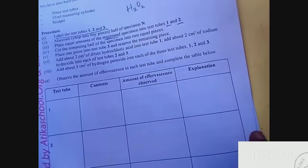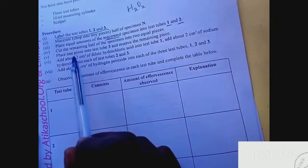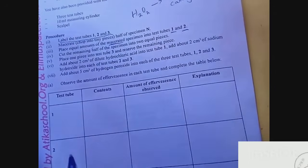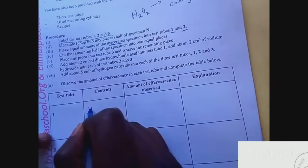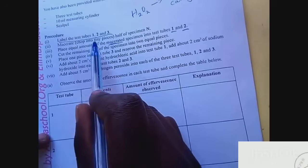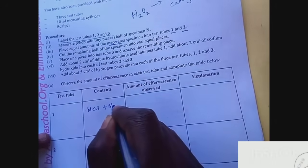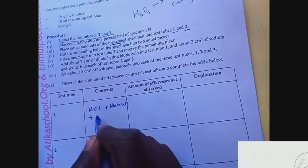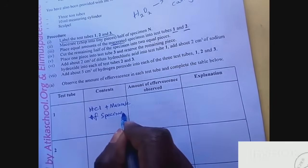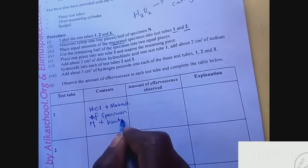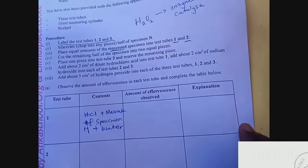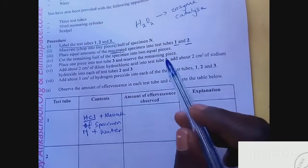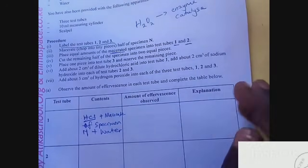Let's see the contents in test tube one. You have been told to add about 2 cm³ of dilute HCl. So the content in test tube one is HCl plus the macerated specimen N plus hydrogen peroxide. What is your observation? First of all, when you see HCl being added and you know you are testing for enzyme catalyst, the acid denatures the enzyme.